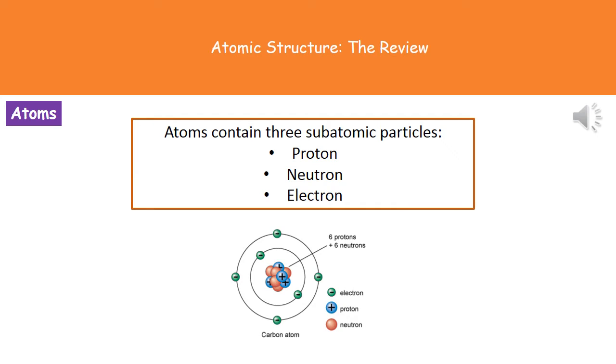What we find then is that absolutely everything, and that includes all of the elements, are made of these things called atoms. Now our atoms themselves are made up of three subatomic particles: the proton, the neutron, and the electron.